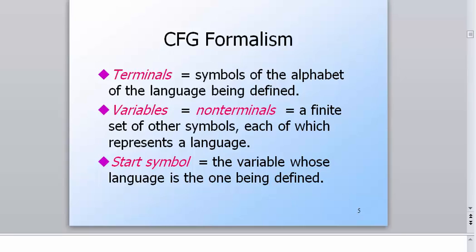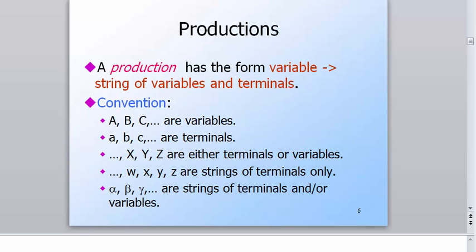Hello everyone, today we'll be discussing context-free grammar, which is another form of describing languages, much like regular expressions. Context-free grammar has its own set of rules. To start off, context-free grammar has terminals, variables, a start symbol, and productions. Terminals are just the symbols of the alphabet of the language being defined. Variables are a finite set of other symbols, each of which represents a language. A start symbol is the one that the language will first start with, and productions are rules that we would use to describe that language.